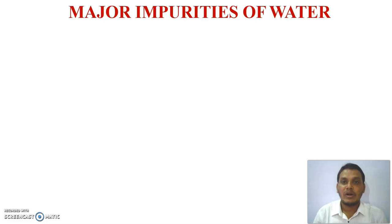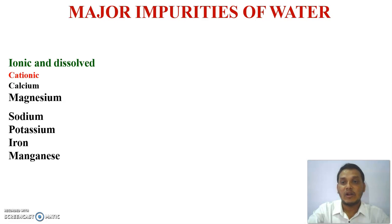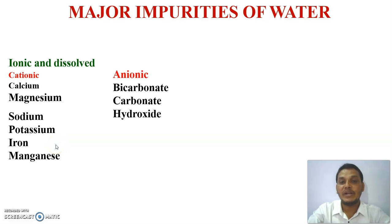The next important point is the major impurities in a water sample. Water samples contain ionic and dissolved types of impurities — either cationic or anionic. Cationic impurities include calcium, magnesium, sodium, potassium, iron, and manganese. Anionic impurities include bicarbonate, carbonate, and hydroxide.